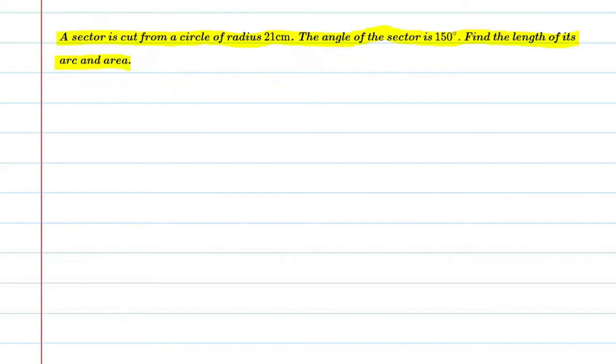Alright, basically this question says that there is a circle and we have cut a sector from it, which has a sector angle of 150 degree. So we need to find the area of the sector and the arc length. Let's start with this question. First of all, we will write given.